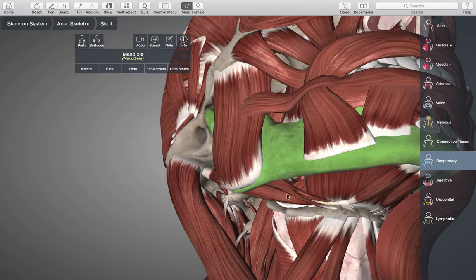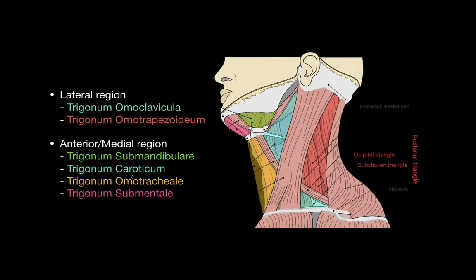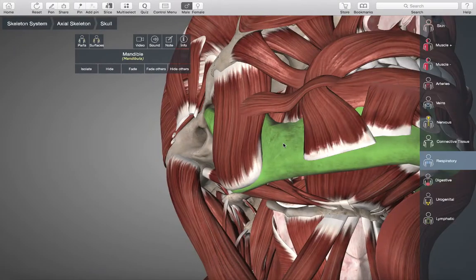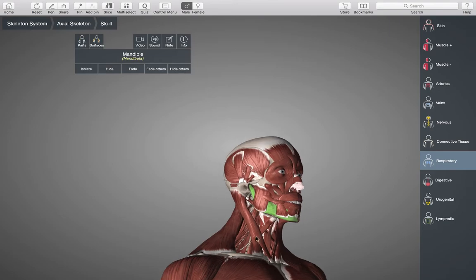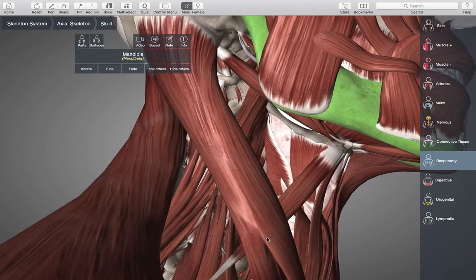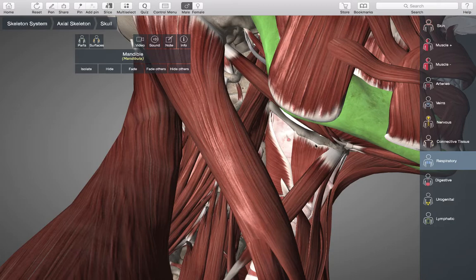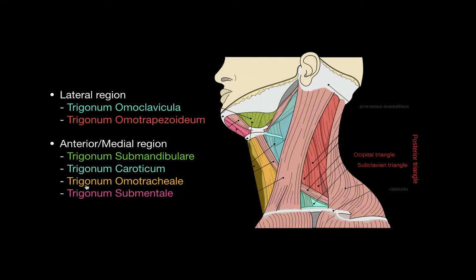The next one is the trigonum caroticum. The trigonum caroticum is made up of the musculus sternocleidomastoideus, the superior belly of homo hyoidus, and then the posterior belly of the digastricus, which is going to be behind this muscle here. Going back to our 3D model, that's our triangle — it's called trigonum caroticus.